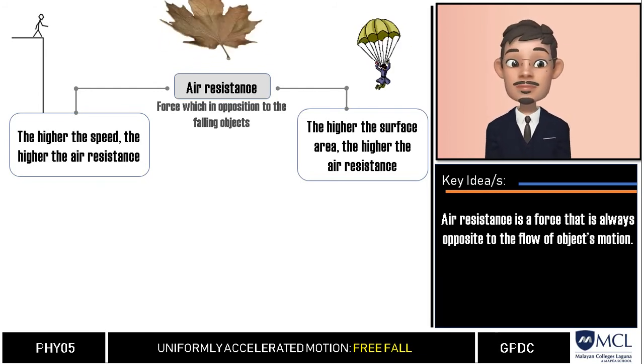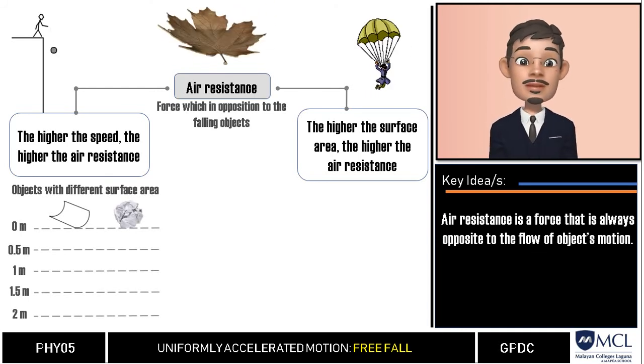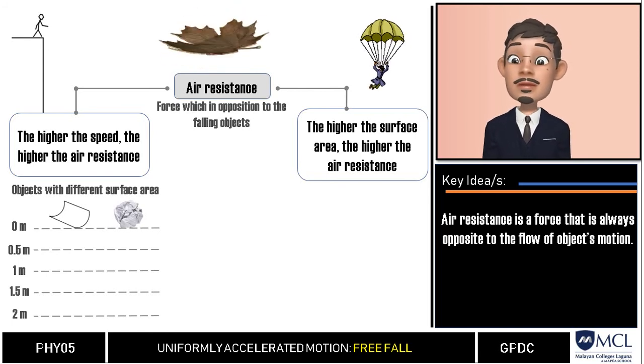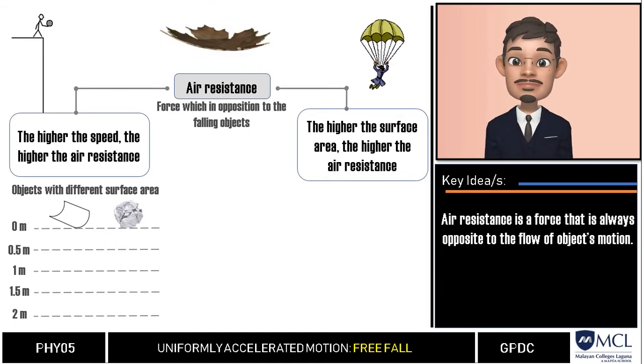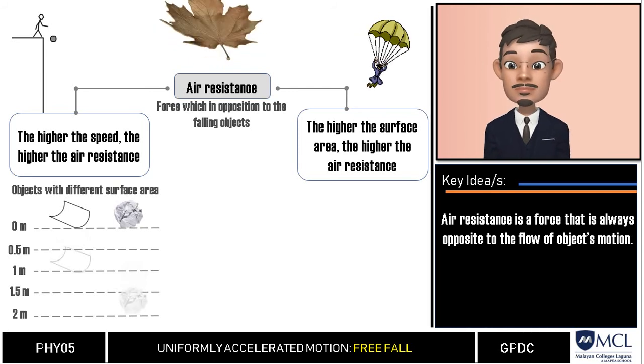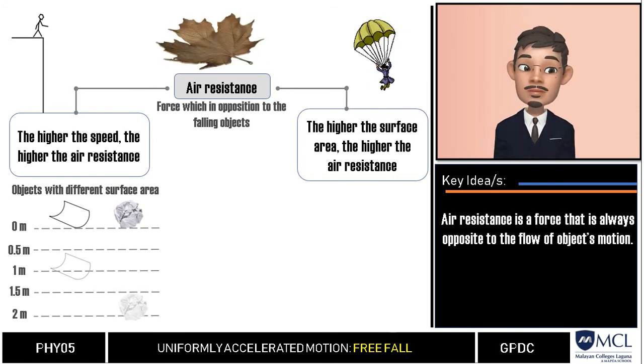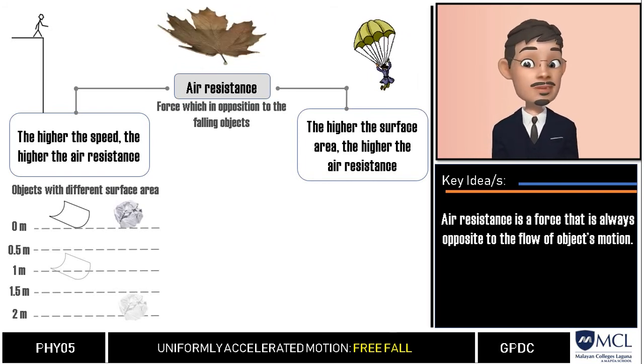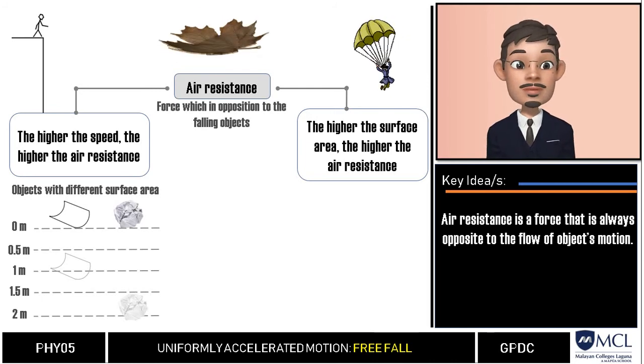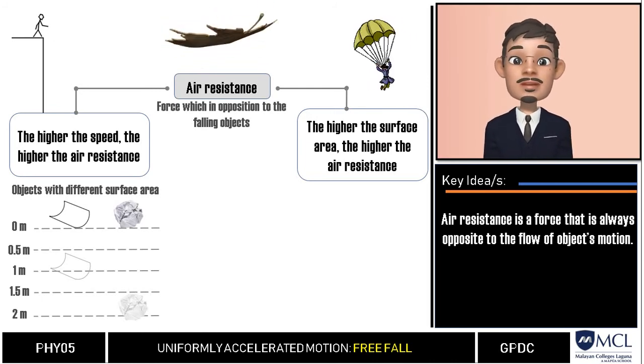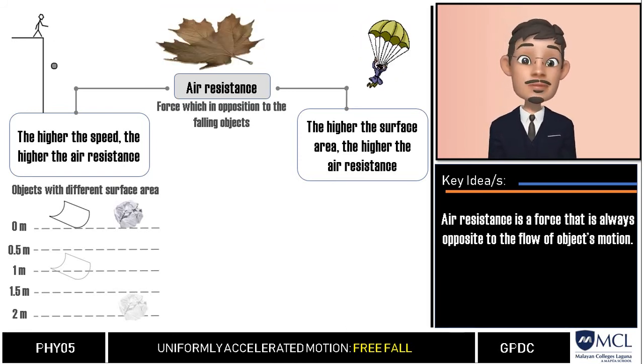We can observe the effect of air resistance when we drop a paper from a certain height. Let us say we drop one crumpled paper and another one flat. When we drop the papers at the same time from the same height, which one do you think will reach the ground first? It will be the crumpled paper. It is because on earth it is not only the gravity that affects a falling object but also the air resistance. Since a flat paper has a larger surface area than the crumpled paper, the flat paper will experience a greater air resistance.